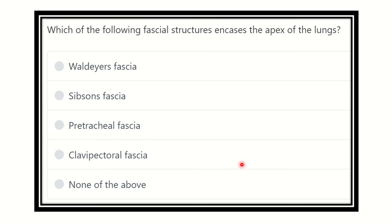Welcome to another question and answer session. Quiz: which fascia structure covers the apex of the lungs? It is a short, direct question. We have to find out the apex of the lungs, then identify the structure which covers it — that is, which lies outside the apex. The options are: Waldeyer's fascia, Sibson's fascia, pre-tracheal fascia, clavipectoral fascia, and none of the above.